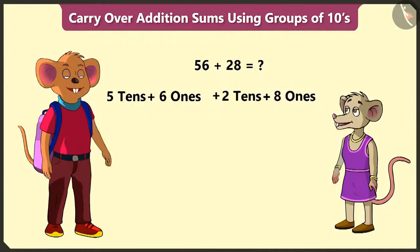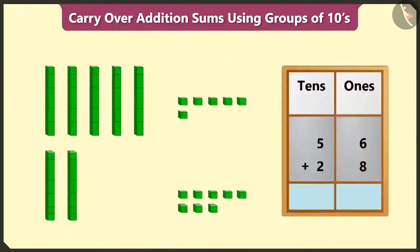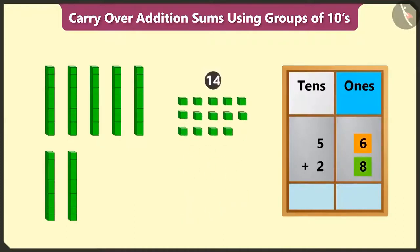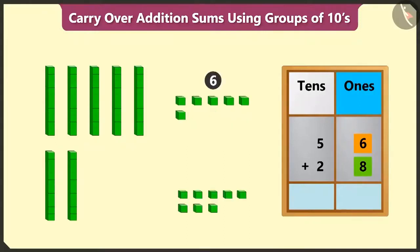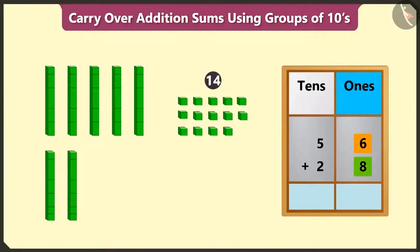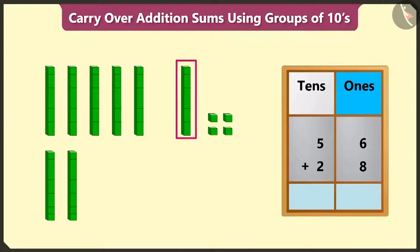Well done. And then? First of all, we will add the numbers in the ones place. 6 ones added to 8 ones will equal 14. This means 6 ones and 8 ones added together will equal 14 ones. And out of 14 ones, we can form a group of 1 ten. So 14 has 1 ten and 4 ones. Now, we have to write 4 in the ones box.